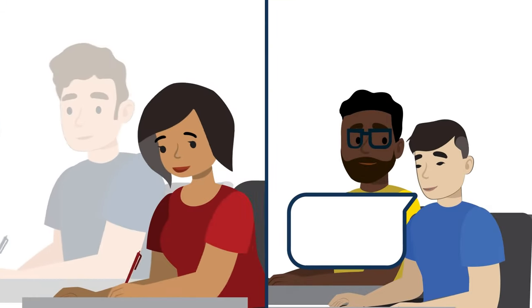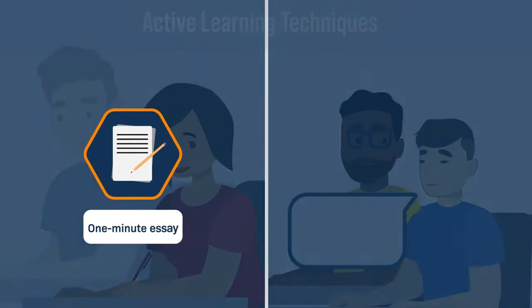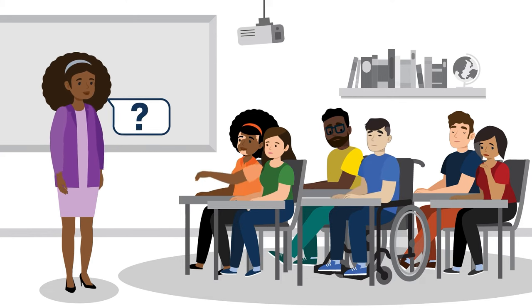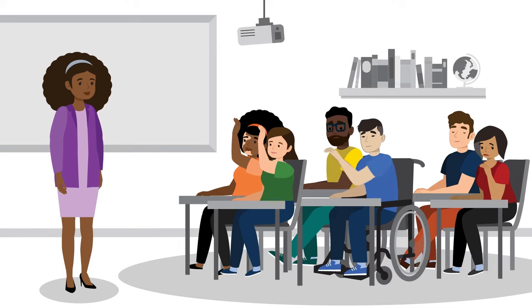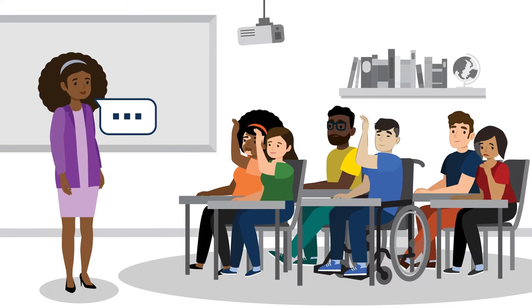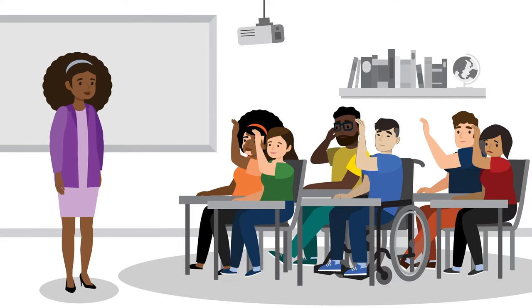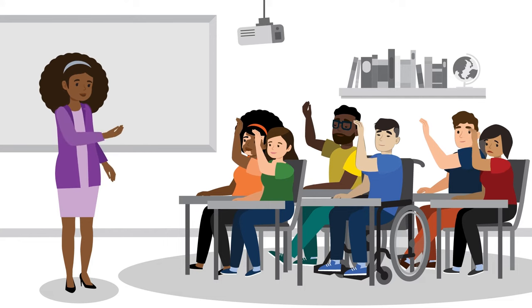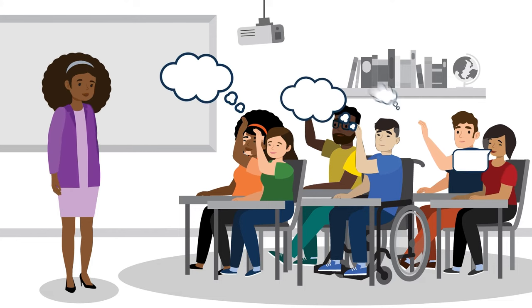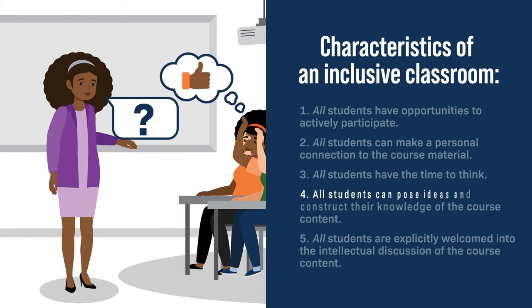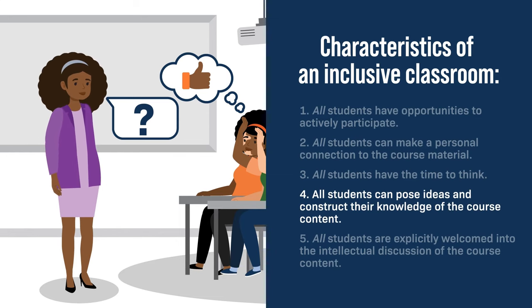To help in this situation, we can turn to active learning techniques such as a one-minute essay or a think-pair-share. These activities effectively provide a minute or two for all students to think about the question and participate in the learning process before asking anyone to answer. Another strategy is to tell students that you won't call on anyone until you see a certain number of hands raised. Techniques like these increase the number of students who are willing to participate in class discussions.